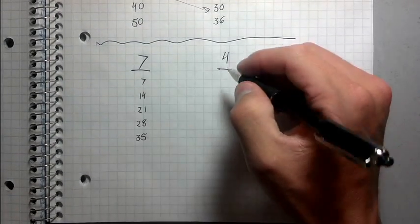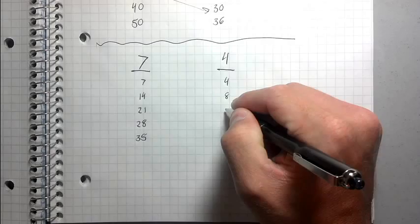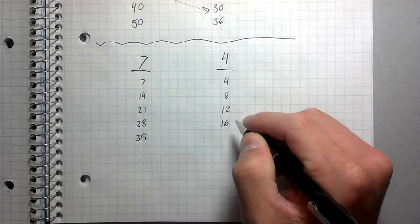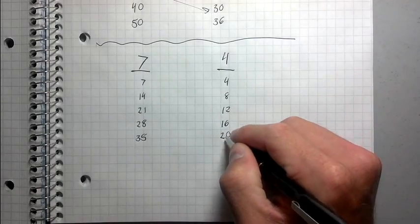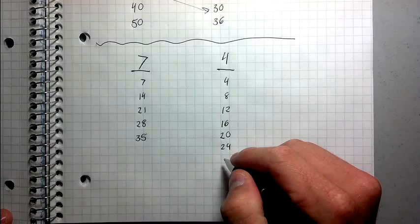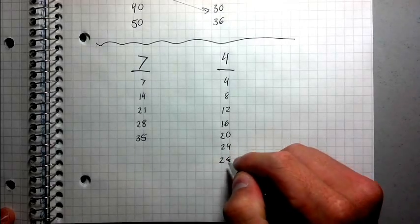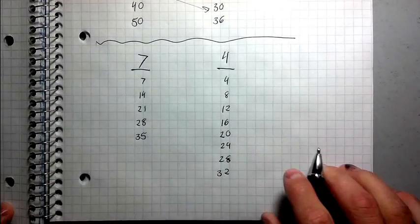So how about 4 now? Count by fours: 4, 8, 12, 16, 20, 24, 28, whoops, 32. Okay.